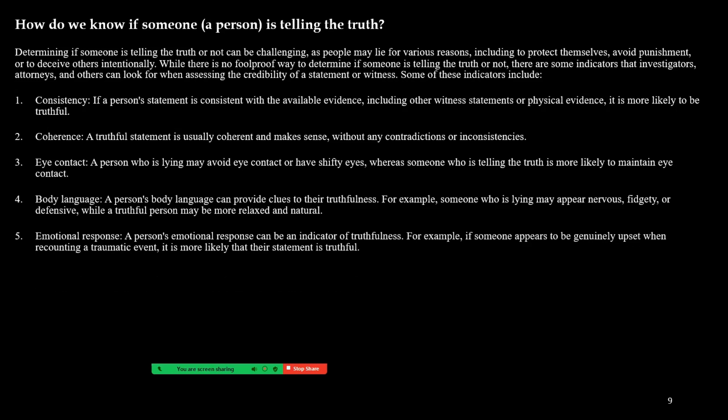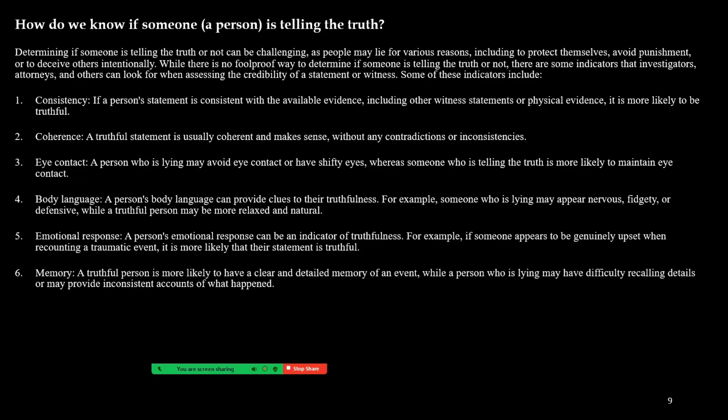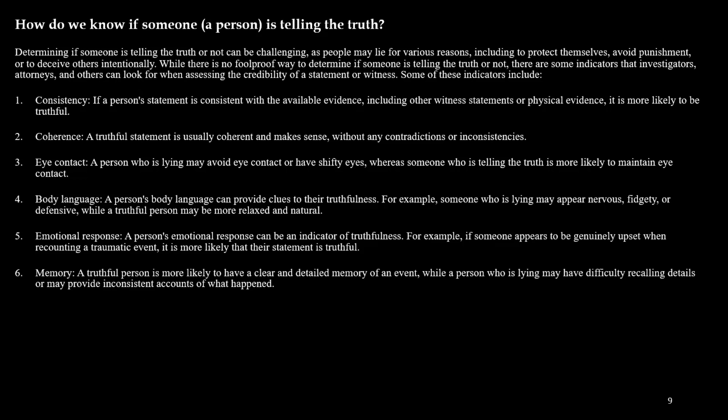Emotional response: a person's emotional response can be an indicator of truthfulness. For example, if someone appears genuinely upset when recounting a traumatic event, it's more likely that their statement is truthful. That said, personality and cultural indicators can also get in the way of these being honest appraisals — just because someone is fidgety doesn't necessarily mean they're not telling the truth. They may just be nervous. And just because someone isn't upset after a traumatic event does not mean they weren't traumatized — they may still be in a form of shock.